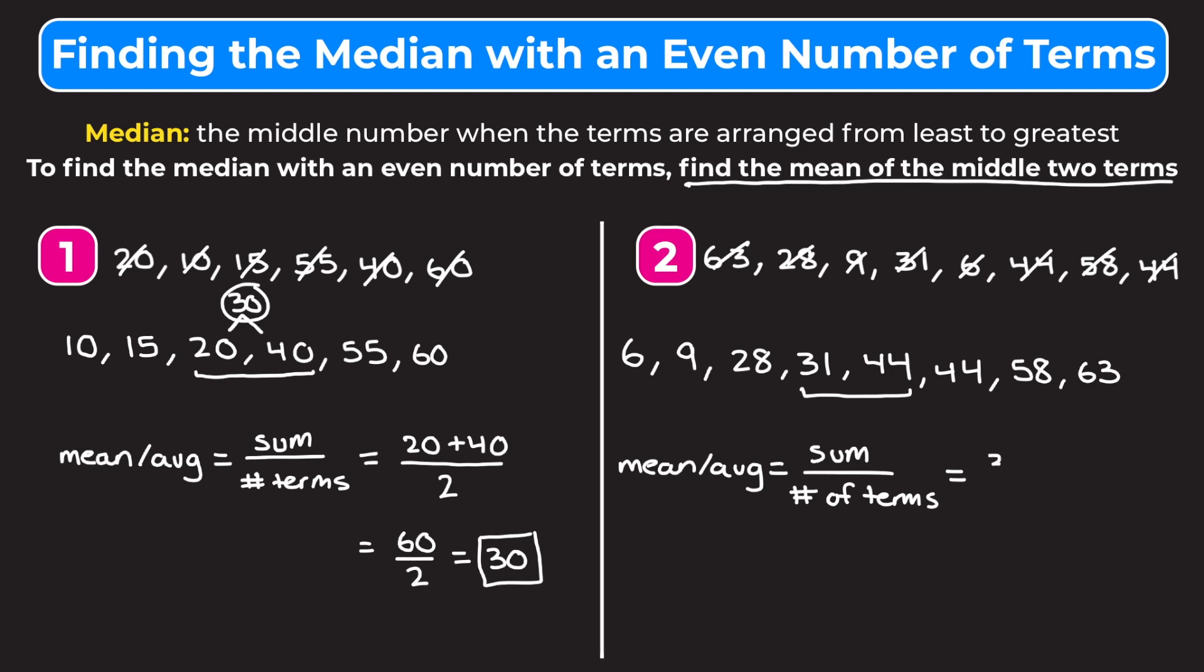We're going to find the sum between 31 and 44, so we're going to add those two together and divide it by 2, because we're finding the average between two numbers. 31 plus 44 is going to give us 75 over 2. If we divide 75 by 2, we should get 37.5 as our median.